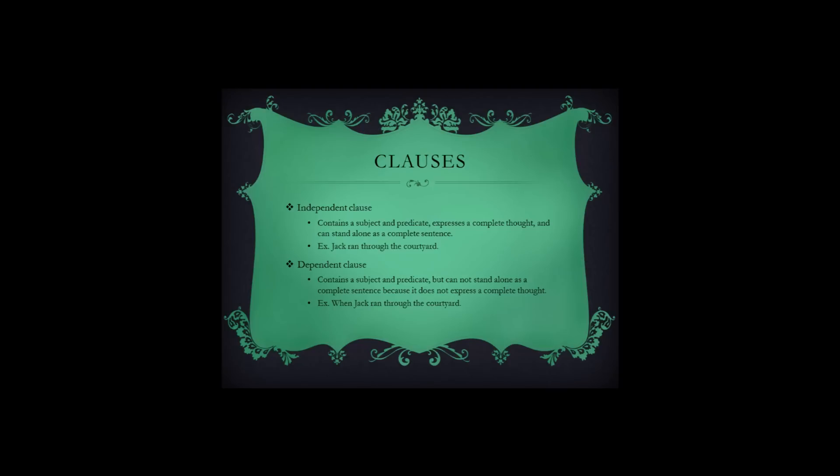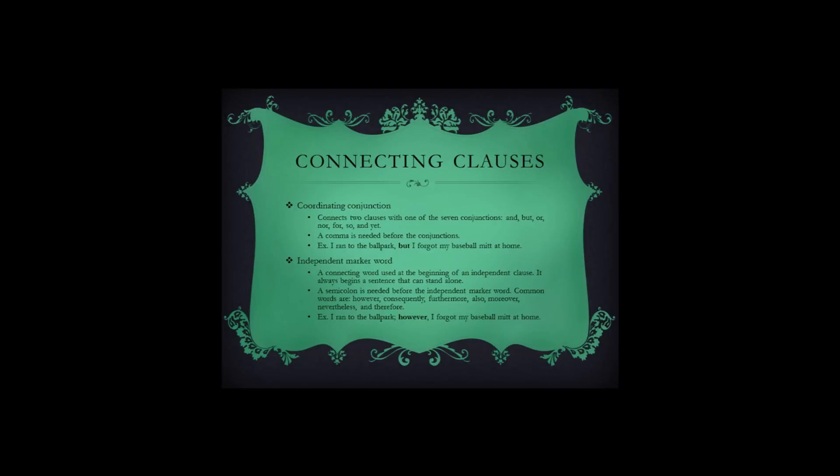Example of a dependent clause: 'When Jack ran through the courtyard.' Connecting clauses — there are two types of ways to connect clauses. You can use a coordinating conjunction or an independent marker word. A coordinating conjunction connects two clauses with one of the seven conjunctions: and, but, or, nor, for, so, and yet.